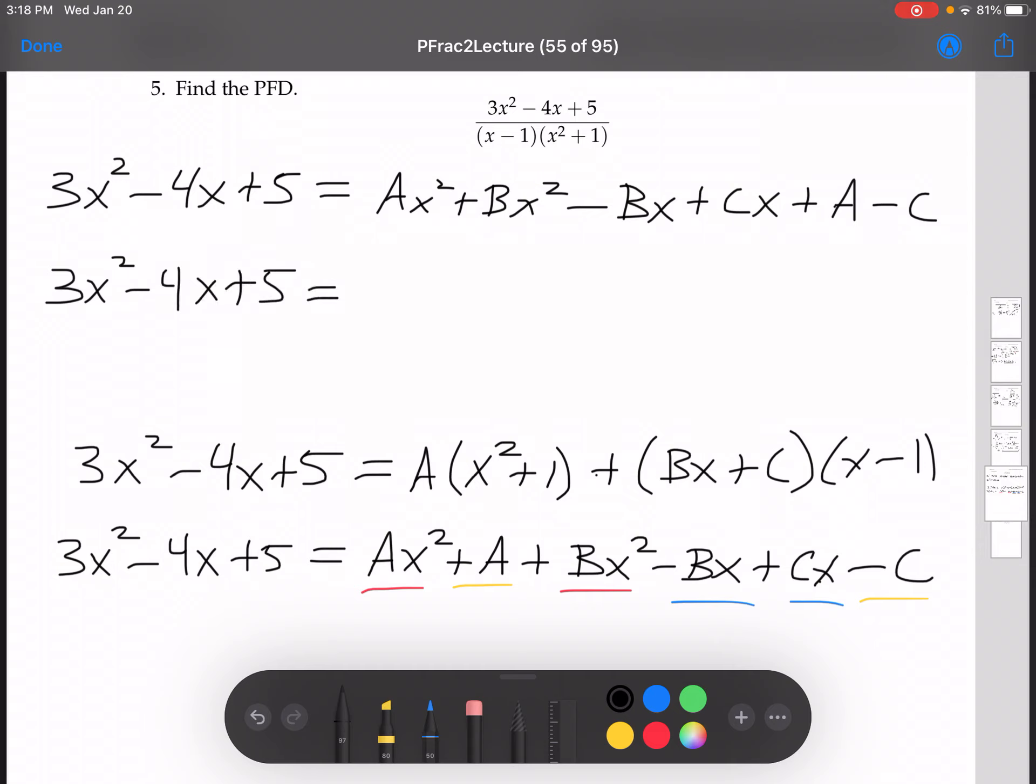Now, distributive property in reverse, we have a plus b times x squared plus negative b plus c times x plus a minus c.